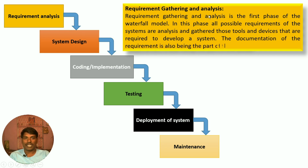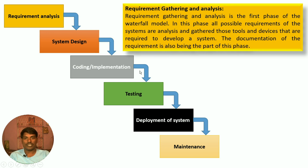Requirement analysis is the first phase of the waterfall model. In this phase, all possible requirements of the system are analyzed and gathered — the tools and resources required to develop the system. Documentation of the requirements is also part of this phase.